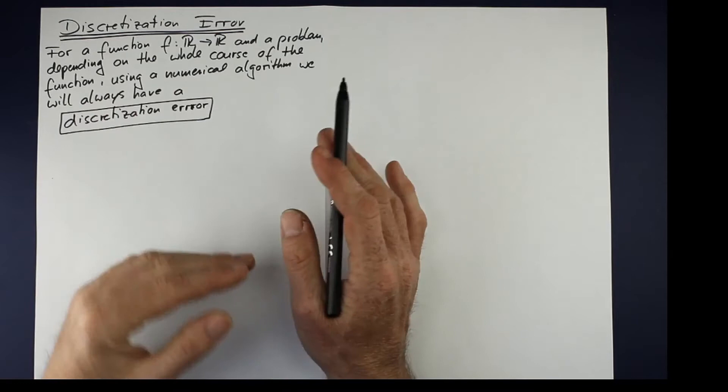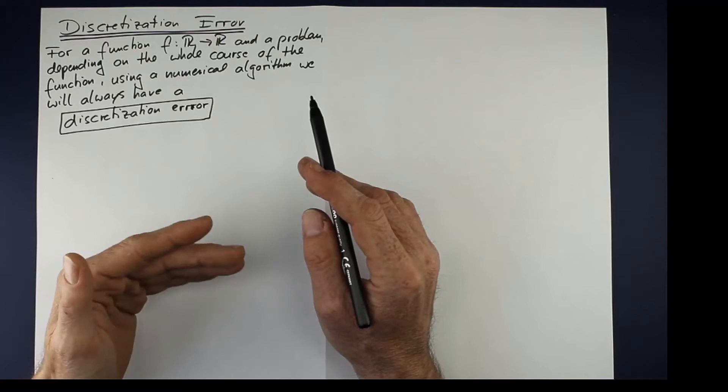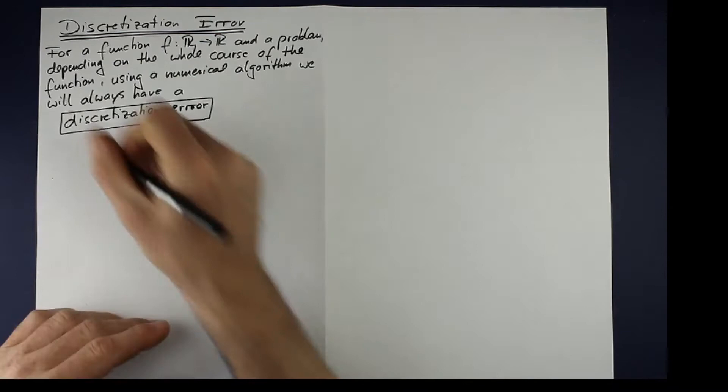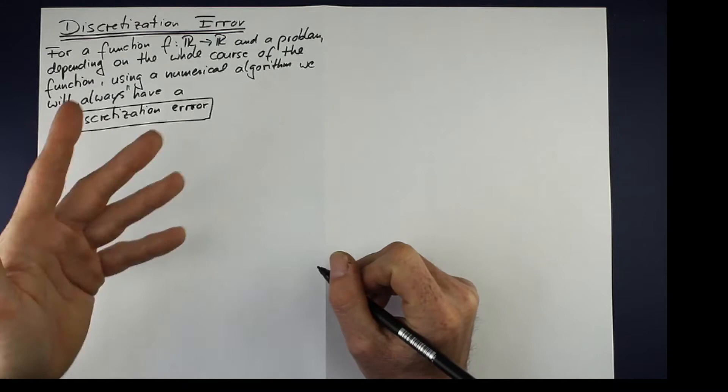then it will be impossible to have an always correct solution. So we will almost always have an error and that comes from the discretization.